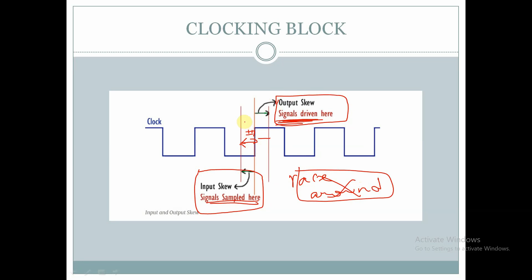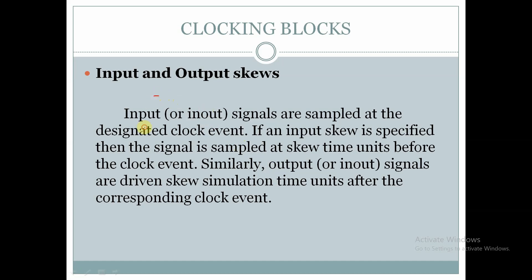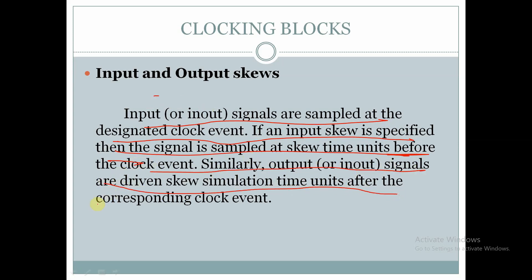Input #1 represents the input skew and output #1 represents the output skew. If we mention 'input #1', then signals will be sampled at a time instance of #1 before the clock edge. If we mention 'output #1', then the signals will be driven after one delay unit after the clock edge. Input or inout signals are sampled at the designated clock event; if an input skew is specified, the signal is sampled at skew time units before the clock event. Similarly, output or inout signals are driven skew simulation time units after the corresponding clock event.